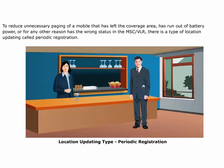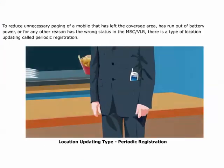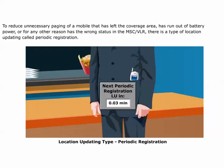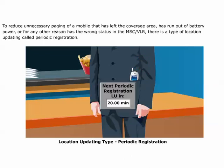To reduce unnecessary paging of a mobile that has left the coverage area, has run out of battery power, or for any other reason has the wrong status in the MSC VLR, there is a type of location updating called periodic registration.